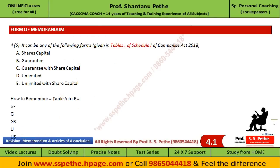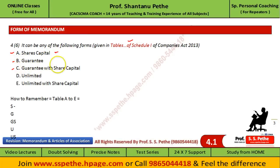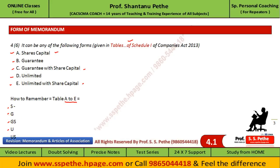Now let's see the forms of Memorandum. Section 4(6) states that the Memorandum of a company can be in the following formats given in the tables of Schedule One of the Companies Act 2013. Table A is applicable for a company having a share capital. Table B for a guarantee company without share capital. Table C for a guarantee company with share capital. Table D for an unlimited company, and Table E for an unlimited company with share capital. Try to remember the order: S G G S U U S.